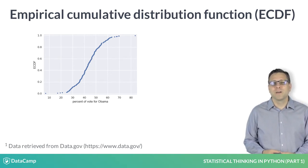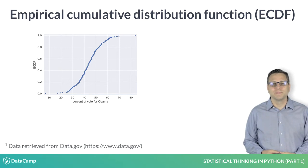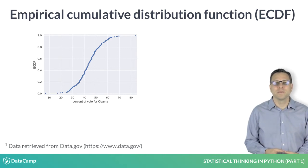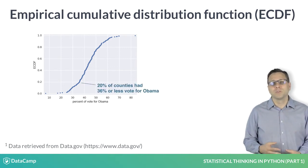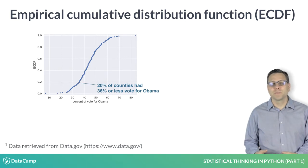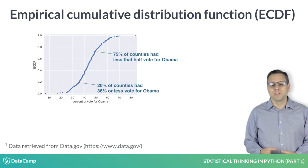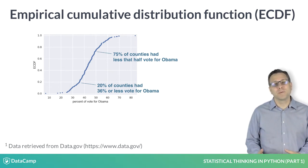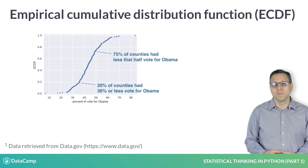Here is a picture of an ECDF of the percentage of swing state votes that went to Obama. The X value of an ECDF is the quantity you are measuring — in this case, the percent of vote that went to Obama. The Y value is the fraction of data points that have a value smaller than the corresponding X value. For example, 20% of counties in swing states had 36% or less of its people vote for Obama. Similarly, 75% of counties in swing states had 50% or less of its people vote for Obama.